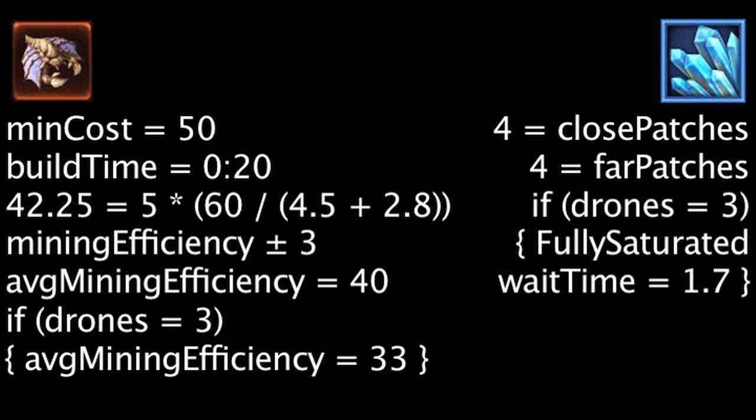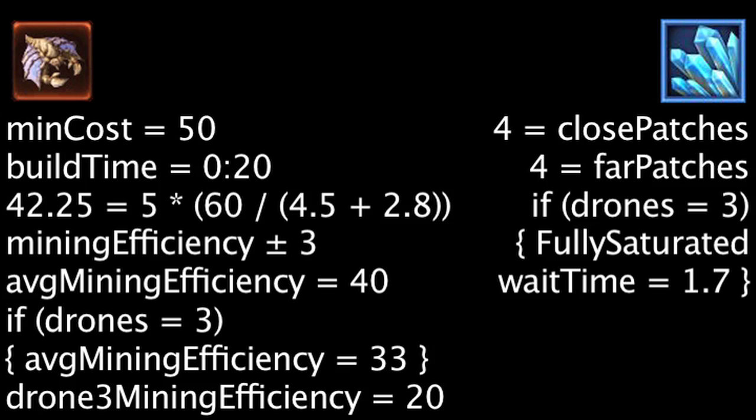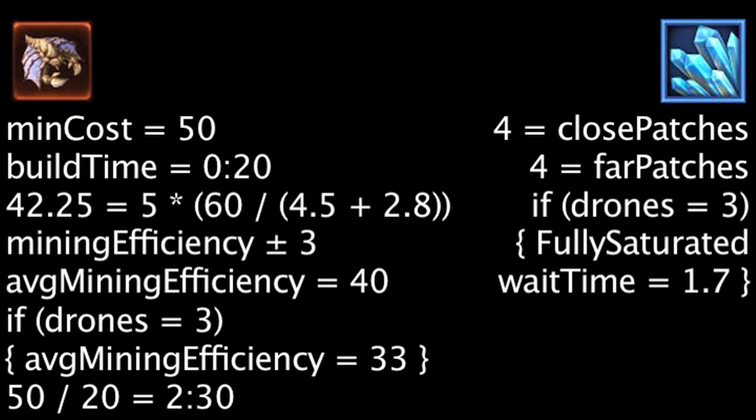If we assume the first two drones are working at their regular efficiency of 40 minerals per minute, this means the third drone is operating at half its normal efficiency, or 20 minerals per minute. This means it will take 2 minutes and 30 seconds of mining for the third drone to pay for itself. It will be 2 minutes and 50 seconds if we take build time into account.